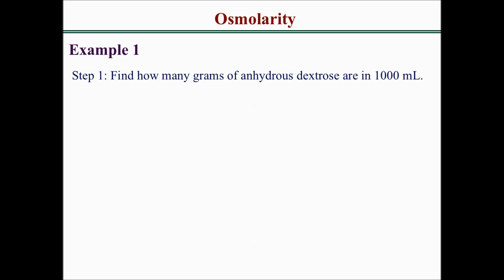Our first step is to find how many grams of anhydrous dextrose are in 1000 mL of the solution. We need to know that 1% of anhydrous dextrose means there's 1 gram per 100 mL. So we have to find out how many grams of anhydrous dextrose are in 1000 mL. We have to set up a proportion.